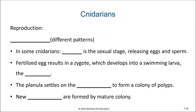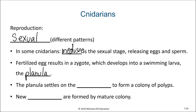When we look at reproduction in these cnidarians, they can reproduce both sexually and asexually. With sexual reproduction, there can be different patterns. In some cnidarians, the medusa is the sexual stage, releasing eggs and sperm. Fertilized eggs result in a zygote, which then develops into a swimming larva known as the planula. This planula then settles on the bottom to form a colony of polyps, and new medusa will then be formed by this mature colony.